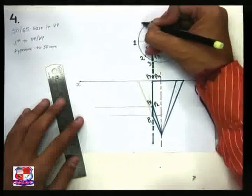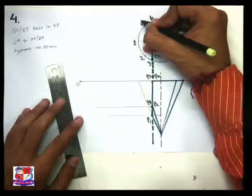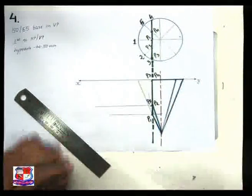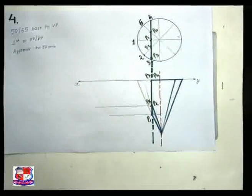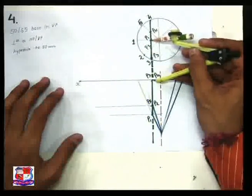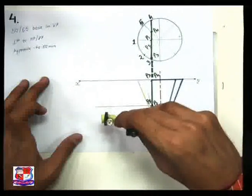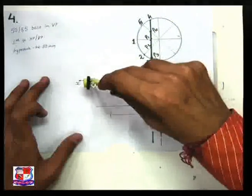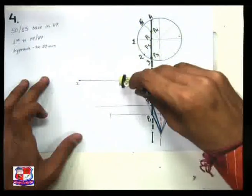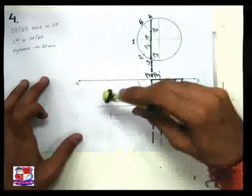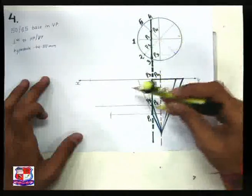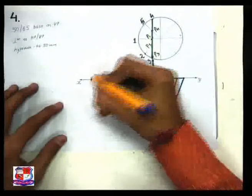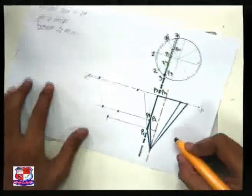Here is point P3, generator 4 is here, generator 5 is here, giving points P4 and P5. From all these points draw horizontal lines. Measure the distance from XY line to point P1 and draw an arc. Measure the distance of P4, P3, P2 similarly — each cuts at the respective location. Locate all end points P1, P2, P3, P4, and P5, and join them with a smooth curve.